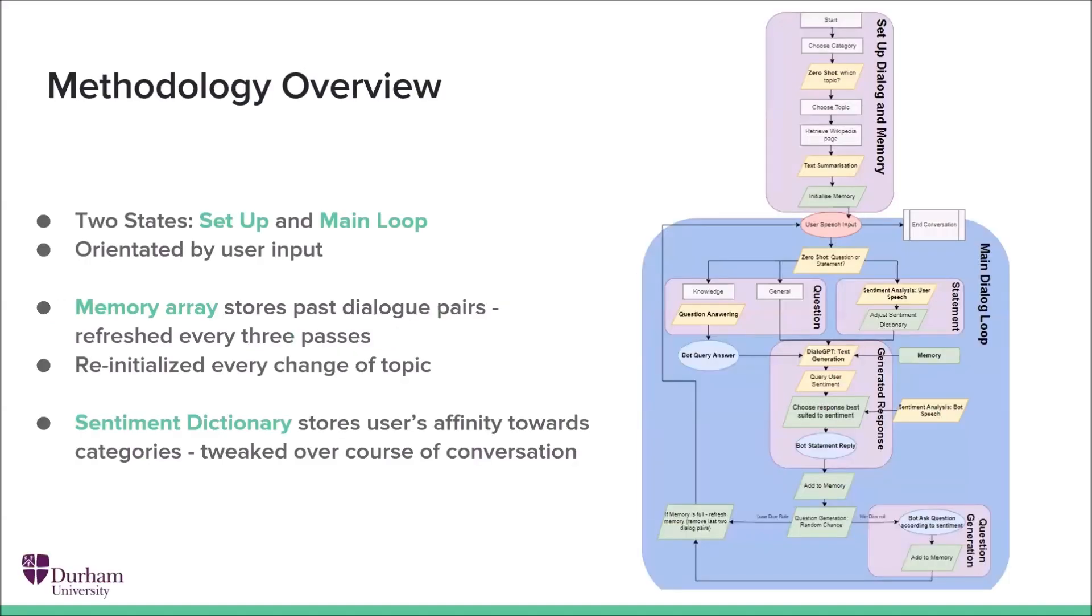So let's have a look about how Jill works. Jill has two main states, the setup state and the main dialogue loop, and we move between them with human verbal input.